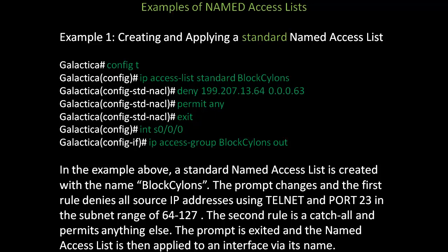In the example above, a standard named access list is created with the name block Cylons. The prompt changes, and the first rule denies all source IP addresses in the subnet range of 64 to 127, because 128 is the next network. The second rule is a catch-all and permits anything else. The prompt is exited, and the named access list is then applied to an interface via its name.